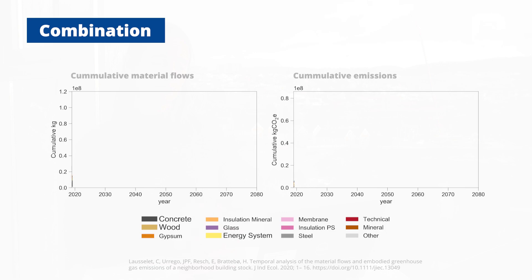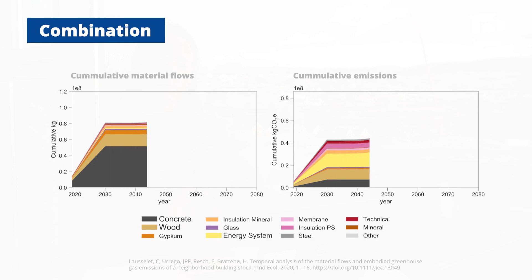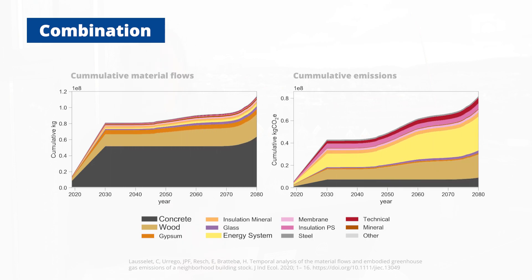What you can see in the cumulative results is that there is a very high peak of construction happening in the first 11 years. In other words, half of the emissions have already happened when you have constructed your neighbourhood. So we really want to decrease this peak of emissions, but also do something over time to decrease the rest of the emissions.